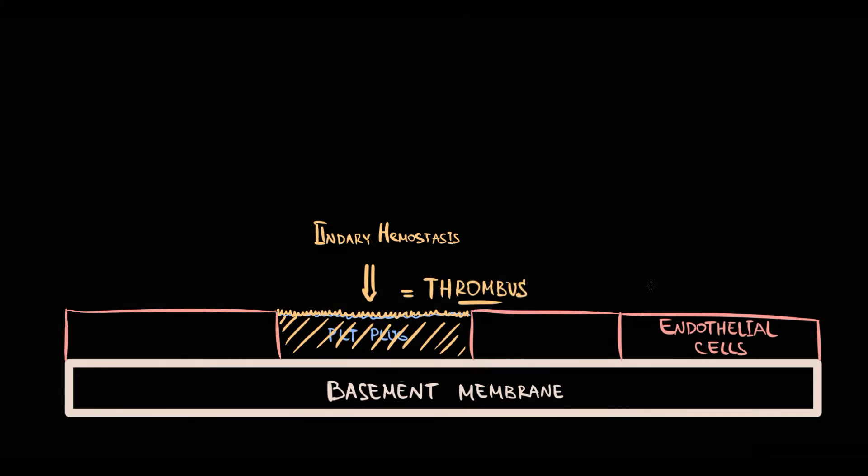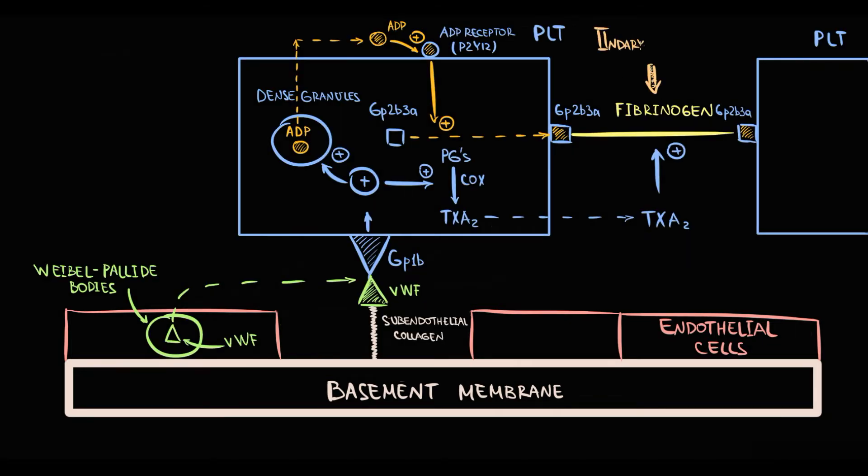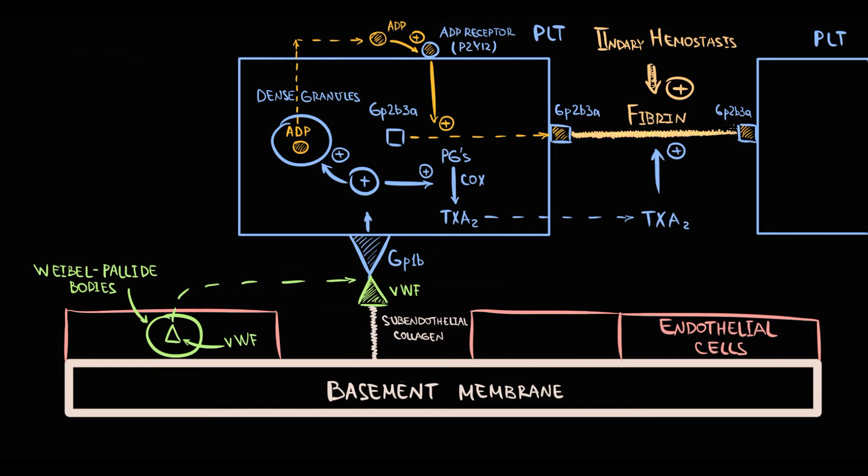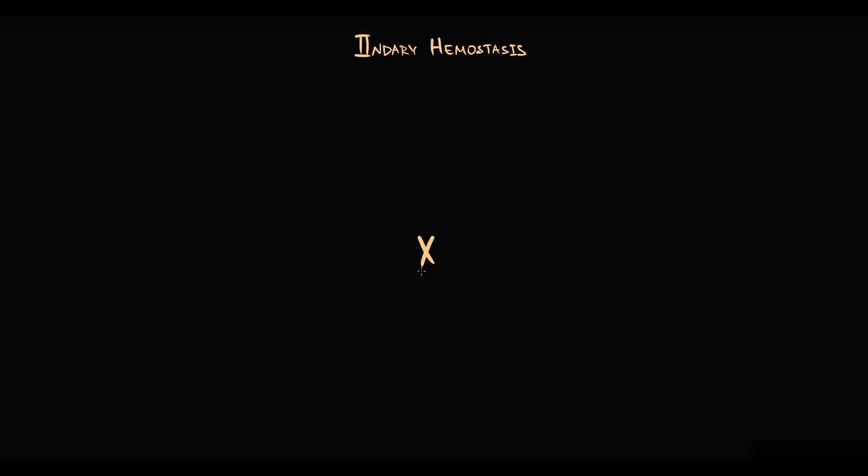The thing that makes this platelet plug formidable is conversion of unstable fibrinogen into stable fibrin. Secondary hemostasis is provided by coagulation factors that form the coagulation cascade. The central factor of the coagulation cascade is factor 10.